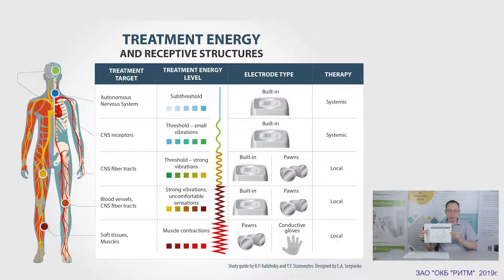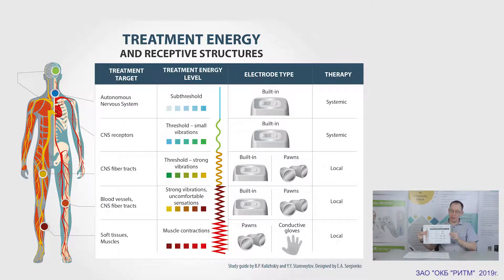At the threshold level, the scanner focuses on the receptors of the central nervous system. It takes more energy to activate them. This level is used in systemic therapy and digital techniques, and we use the built-in electrode.